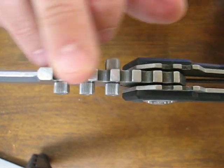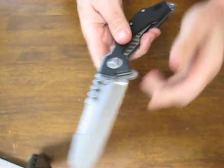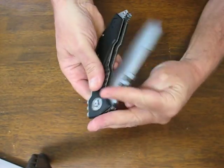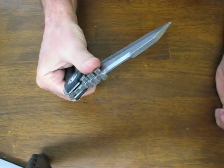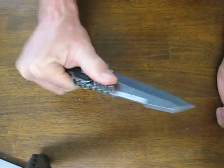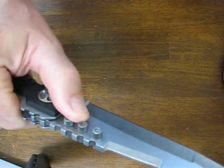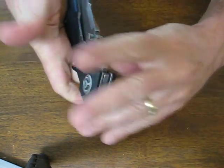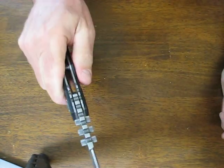Note the heavy jimping on the spine of the blade. Also there are three thumb studs and at first I thought those were just for looks but really they are very nice to open up. It feels really good. You get a great grip on there with your thumb. They're dual ambidextrous.